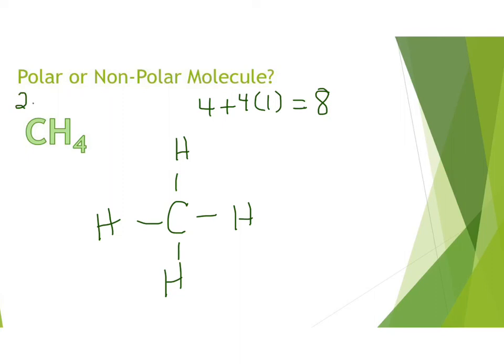Then we go and we check the electronegativity values. So you have 2.5 and 2.1. So if we do 2.5 minus 2.1, we get a difference of 0.4. 0.4 is less than 0.5, so this has nonpolar bonds.